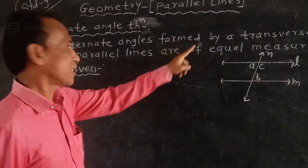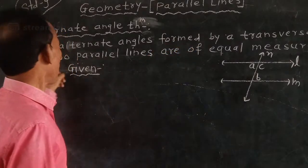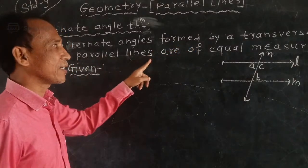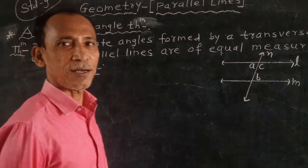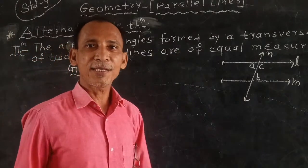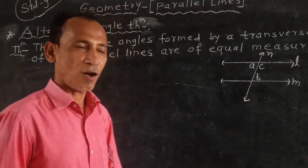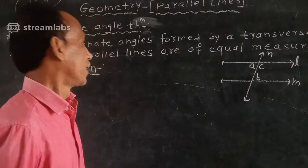Alternate angles formed by a transversal of two parallel lines are of equal measure, meaning they are congruent.